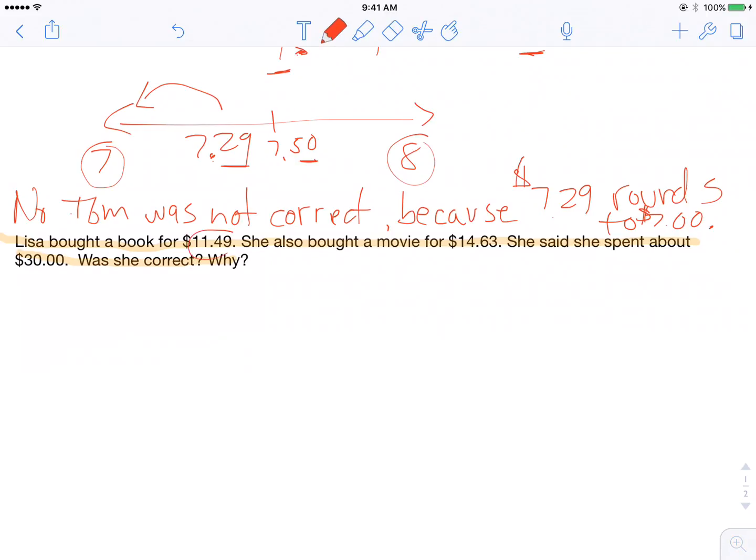So the first thing I notice is that she bought two things. And the total of these two things she estimated to be $30. So my first step is going to be to add those two things together to find out how much she spent.